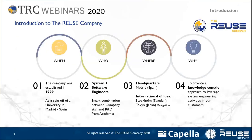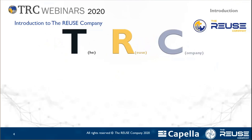A few words about Varius company. This company was established in 1999 as a spin-off of a university here in Madrid. We have managed to bring together people from different skills: software engineers, systems engineers, and now artificial intelligence and natural language processing people. The company is headquartered in Madrid, with a small commercial office in Stockholm, Sweden, and a delegation with a main partner in Tokyo, Japan. Our aim is to provide a knowledge-centric approach to leverage systems activities for all our customers. TRC — The Reuse Company — we like to use this acronym to make our name shorter.